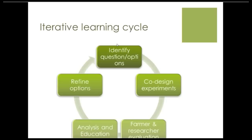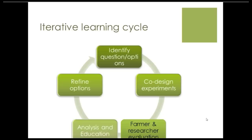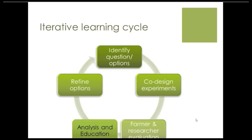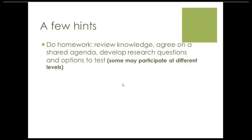This is sometimes called a learning cycle: first identifying the question or options, then co-designing an experiment, developing evaluation criteria with both farmer and researcher evaluation, statistical analysis to synthesize beyond one small set of on-farm sites, and conducting education. Then refining the options and, if necessary, going back to the drawing board for a totally different type. For example, in an experiment I showed you, we had cover crop best bets, and now we're moving on to different types of perennial grains because we're finding cover crops don't do all the things we need.